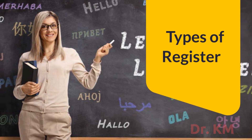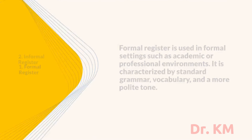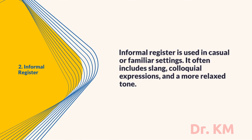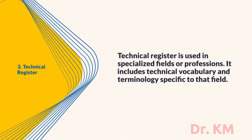Types of Register: Formal register is used in formal settings such as academic or professional environments, characterized by standard grammar, vocabulary, and a more polite tone. Informal register is used in casual or familiar settings and often includes slang, colloquial expressions, and a more relaxed tone. Technical register is used in specialized fields or professions and includes technical vocabulary and terminology specific to that field.